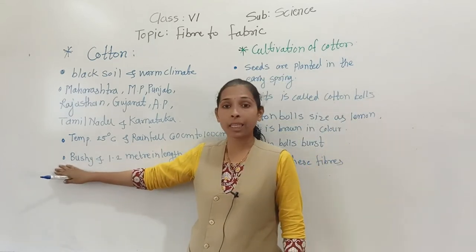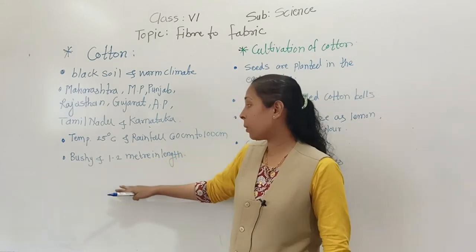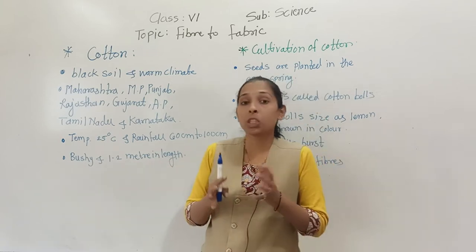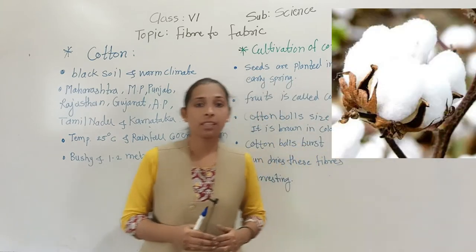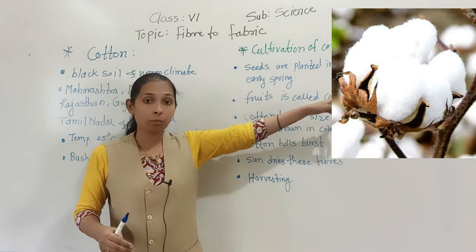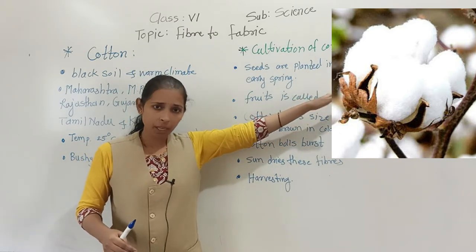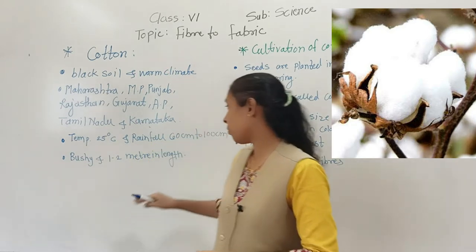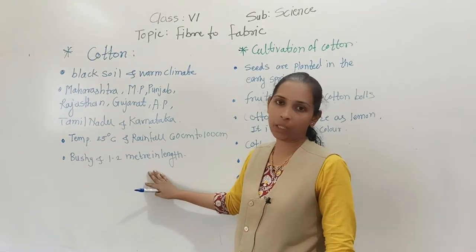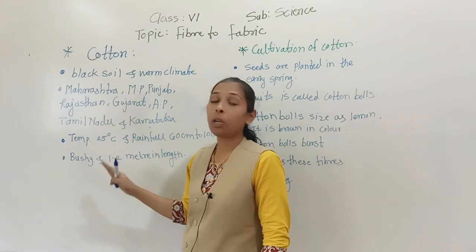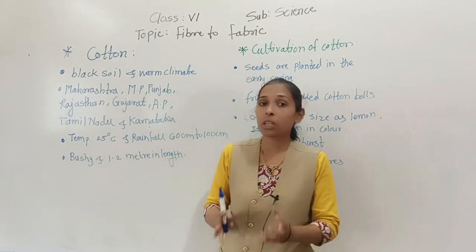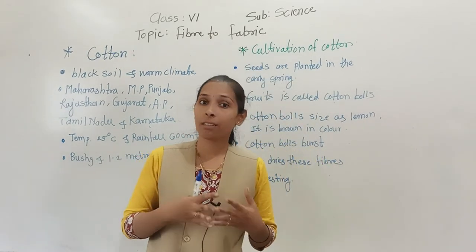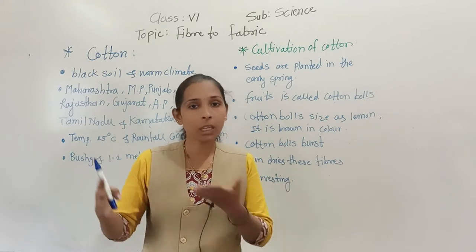The fully grown cotton plant is bushy and is about 1 to 2 meters in length. Here you can see in the image how it is bushy and the height of the cotton plant is 1 to 2 meters. So this covers how the cotton plant looks, its height, where it is cultivated, how much rainfall it requires, and what temperature is needed.